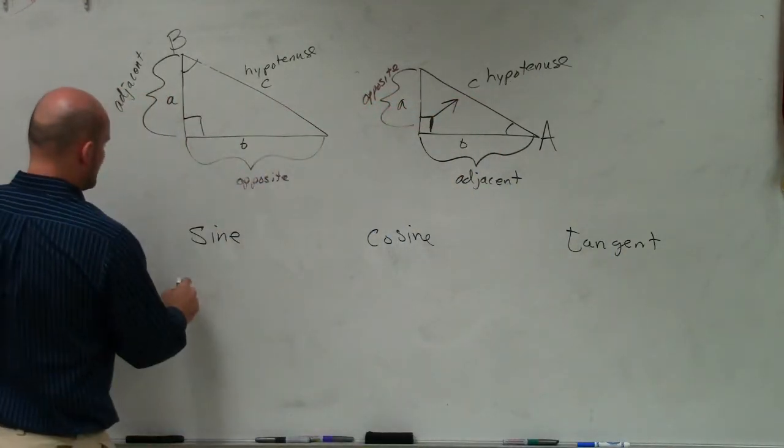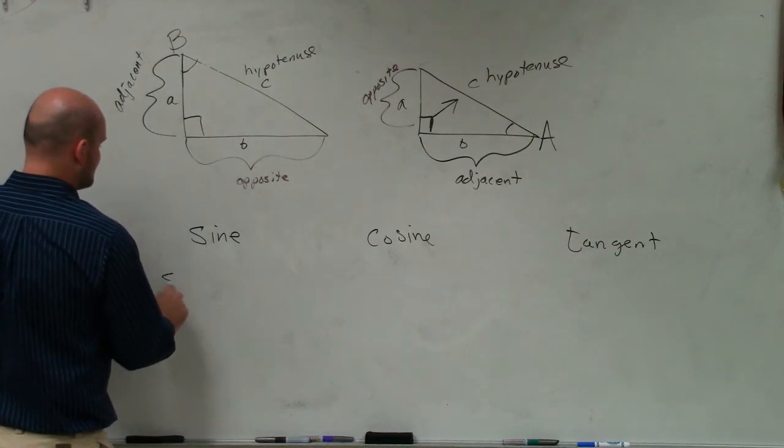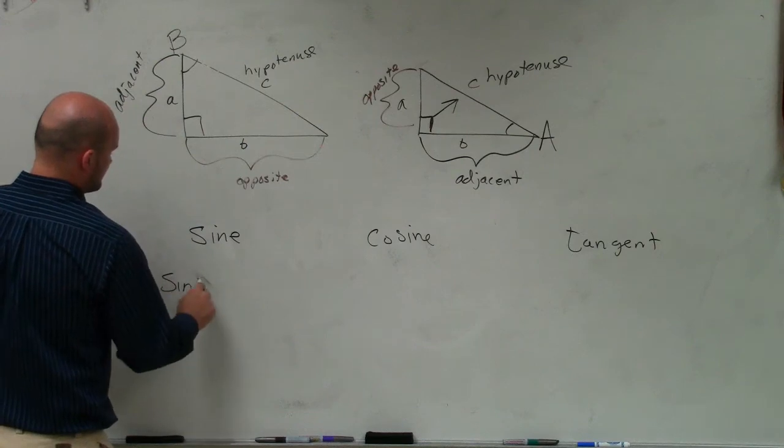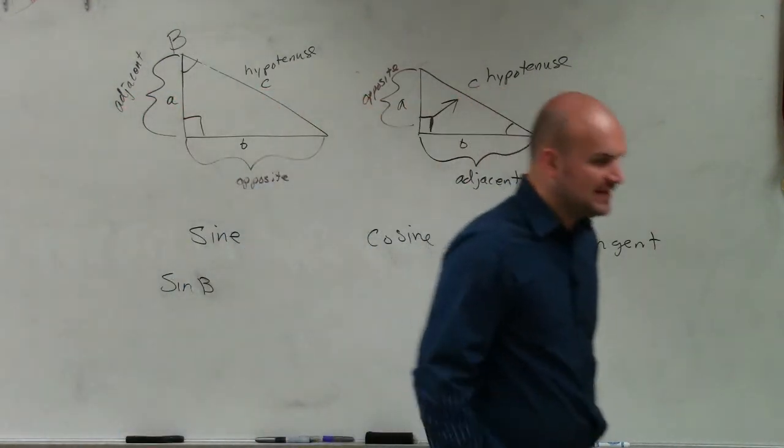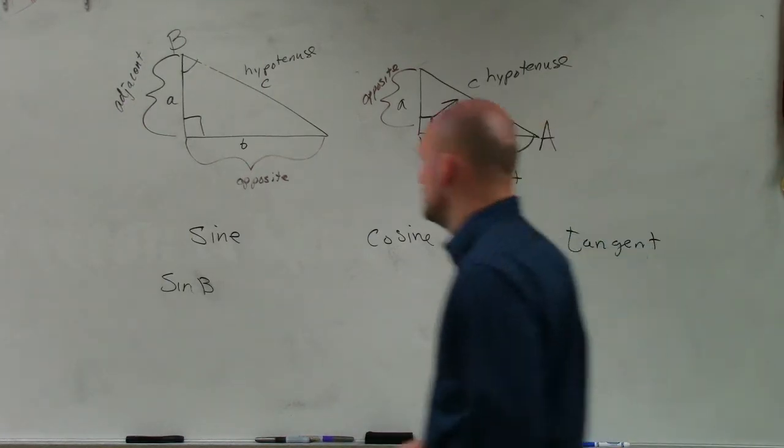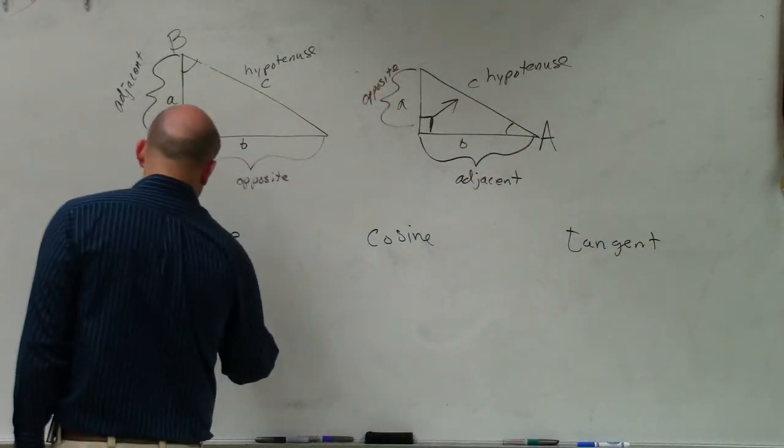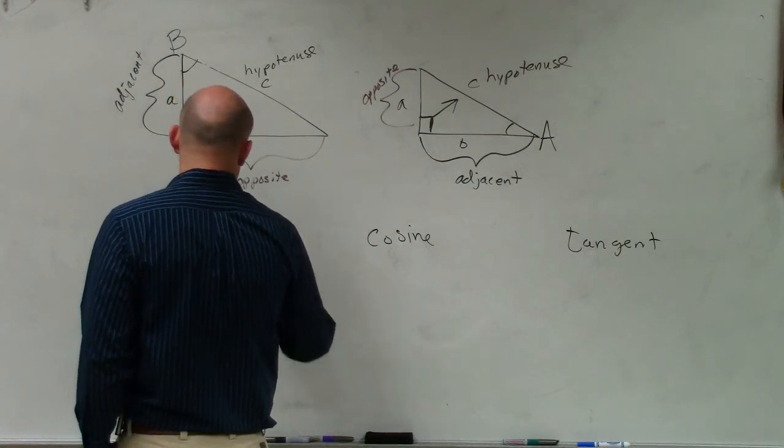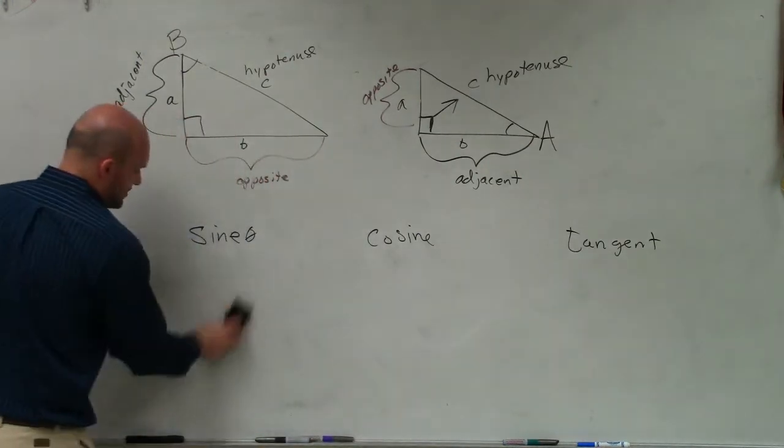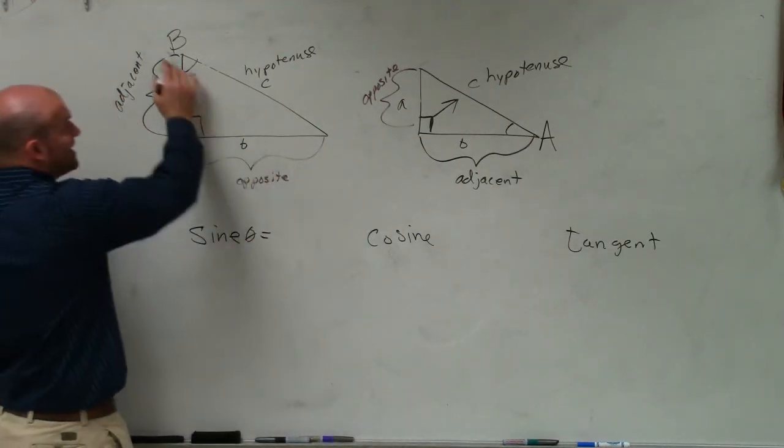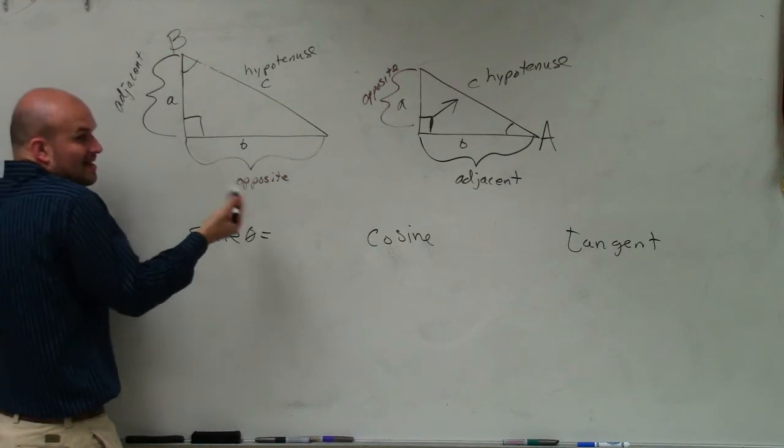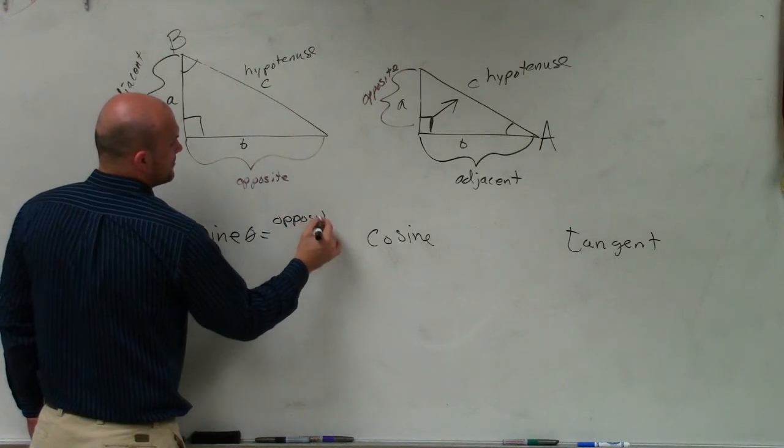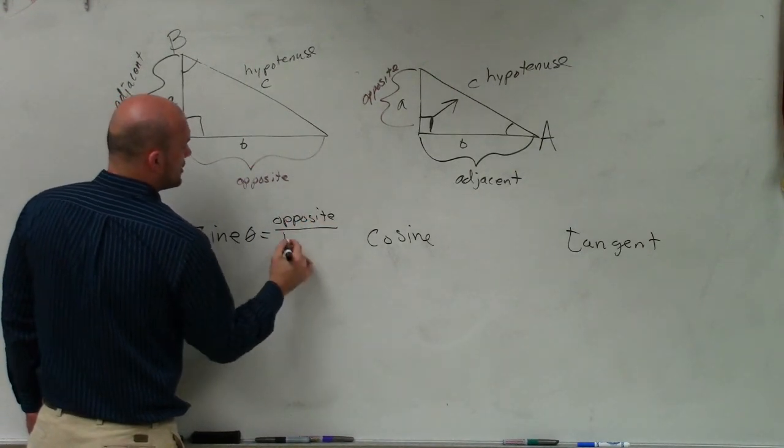So I'm going to do two of them. I'll do it for this triangle. So the sine function, the sine of B, as we write it. Let me actually write it up here real quick. The sine of theta, which could be any angle. That could be B or it could be A. It doesn't matter. For any angle, the sine of your angle represents the ratio of the opposite side over your hypotenuse.